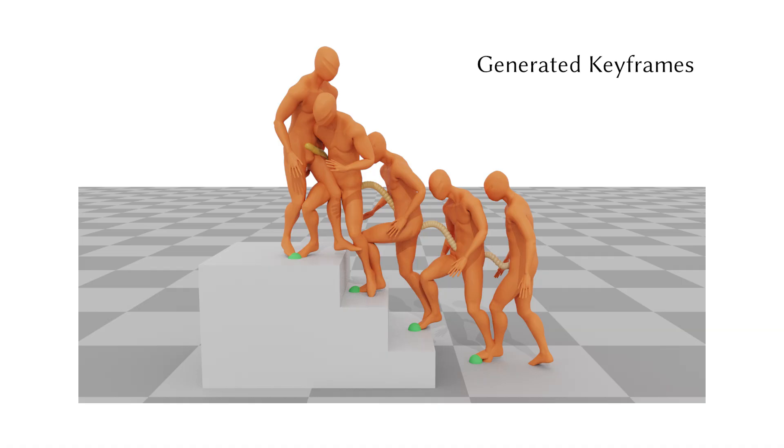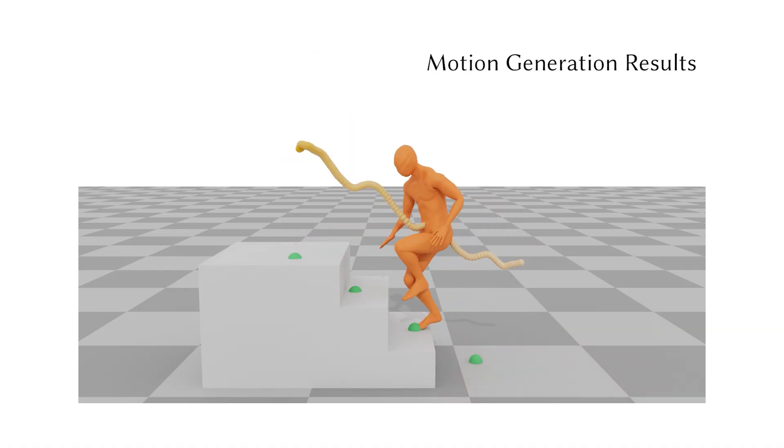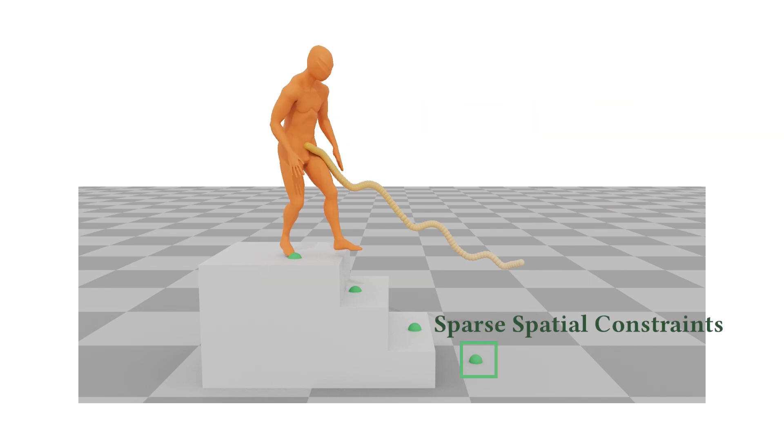Auto-Keyframe is a novel framework that tackles motion synthesis and editing by generating keyframes directly under the control of 3D route trajectories and flexible sparse spatial constraints on specific joints.